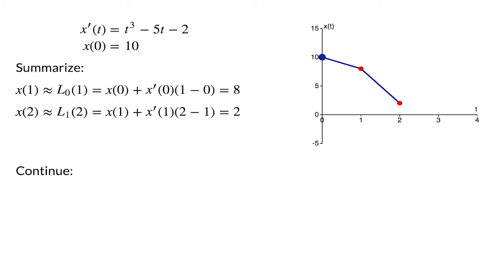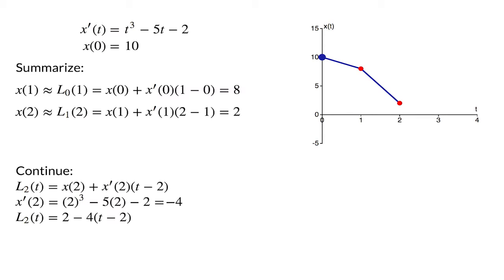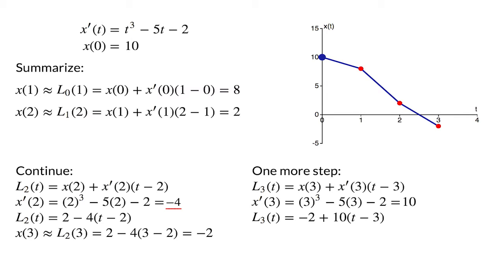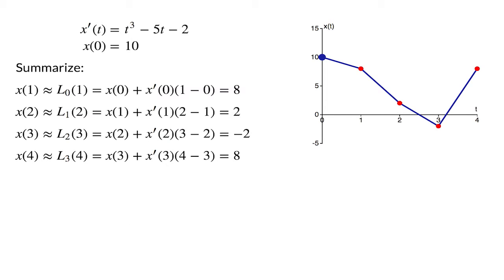For these steps, I won't describe all the calculations — you can pause the video if you'd like to follow all the details. We write down a linear approximation for x of t at t equals 2. The important fact to note is that x prime of 2 is negative 4; the derivative has increased a little bit. We draw a line sloping downward with slope negative 4, and from this line we estimate that x of 3 is about negative 2. For the fourth and final step using delta t equals 1, we write down a linear approximation at t equals 3. Note that x prime of 3 is 10; the slope has become large and positive, and this last linear approximation increases rapidly. The forward Euler estimate of x of 4 is 8.